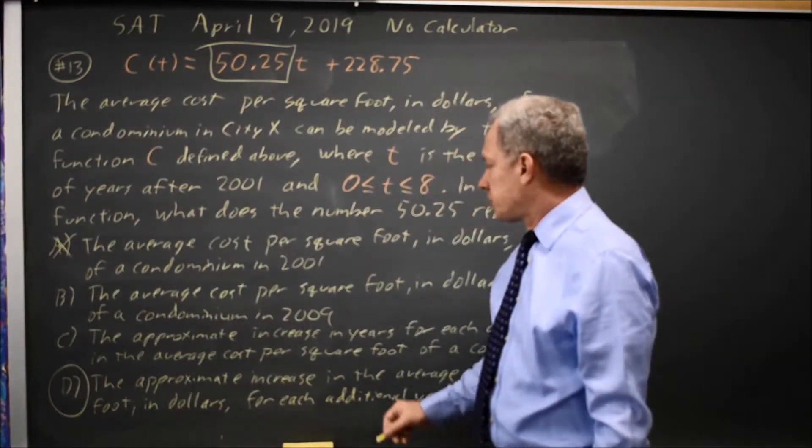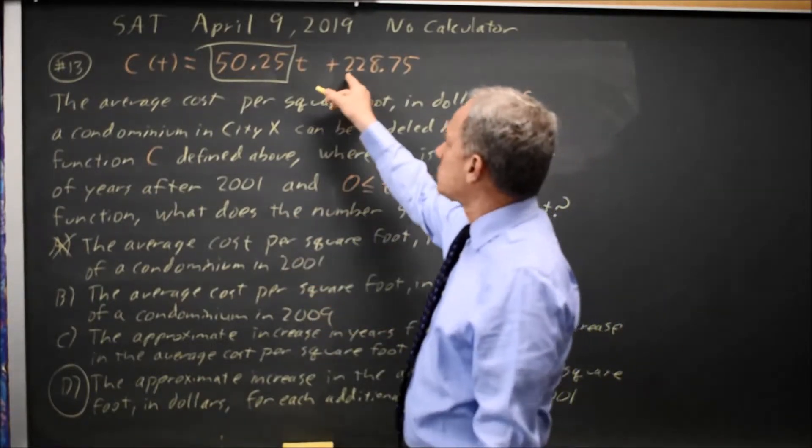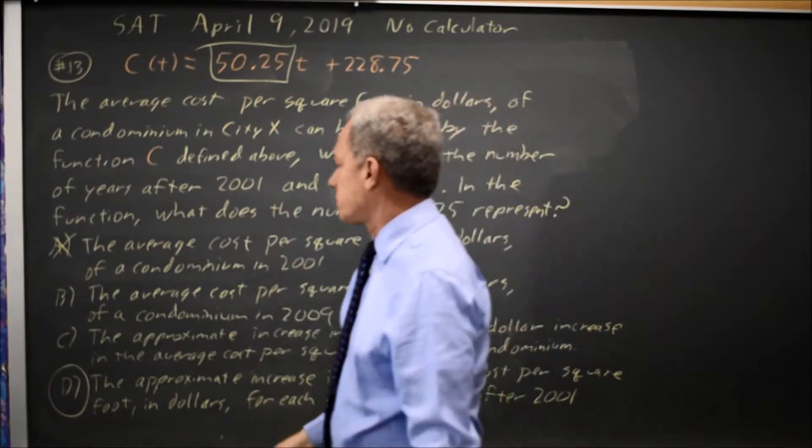Choice B, average cost per square foot in dollars in 2009. That would be larger than 228 by 8 times the 50.25. So that's wrong.